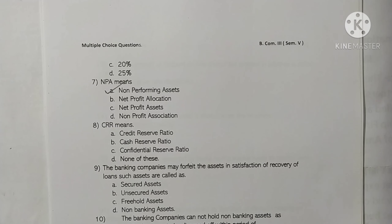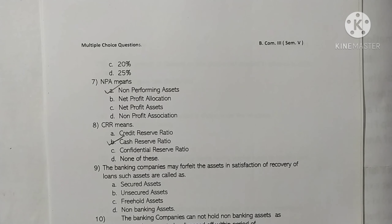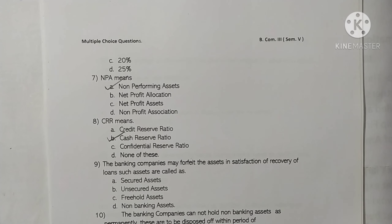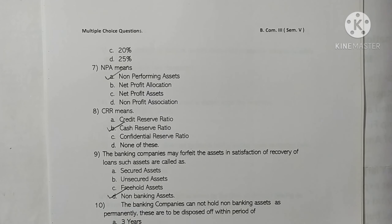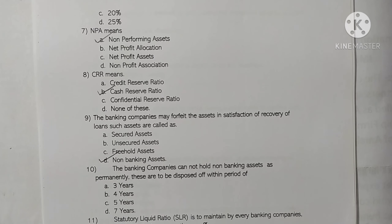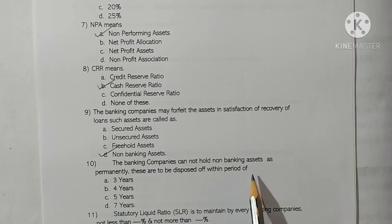CRR means Cash Reserve Ratio. Option B is correct. The banking company may forfeit assets in satisfaction of recovery of loans. Such assets are called non-banking assets. Option D is correct. The banking companies cannot hold non-banking assets permanently; these are to be disposed of within a period of 7 years. Option D is correct.